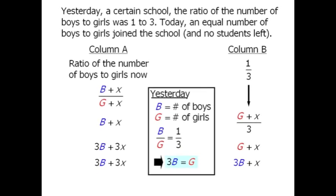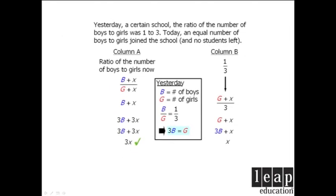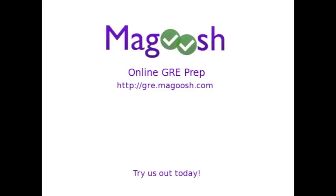From here, we'll subtract 3B from both sides, so we're now comparing 3X and X. Since X must be a positive number here, we know that column A must be greater than column B, in which case our answer is A.